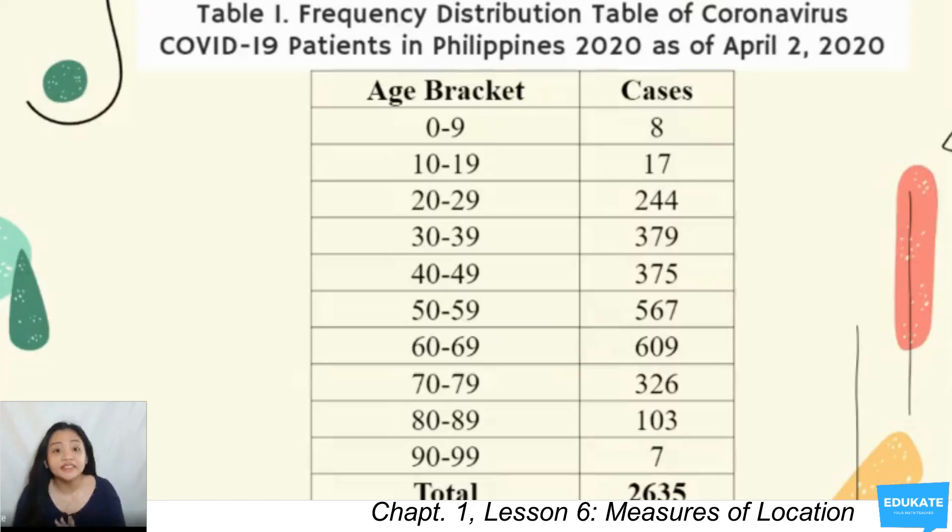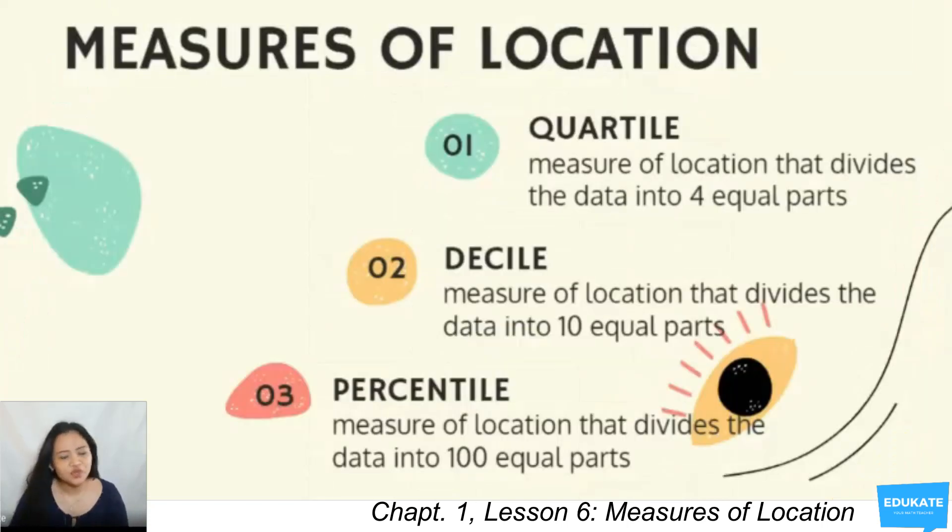And ages 90 to 99 having the lowest number of cases. How do you think we can look for the age that divides the population of 2,635 patients into 50%? How about the age where at most 75% of the 2,635 patients are less than or equal to it? These questions could be answered by knowing the measures of location, sometimes called measures of position.